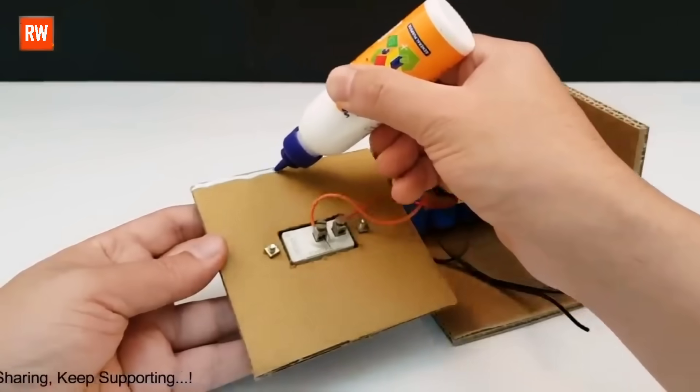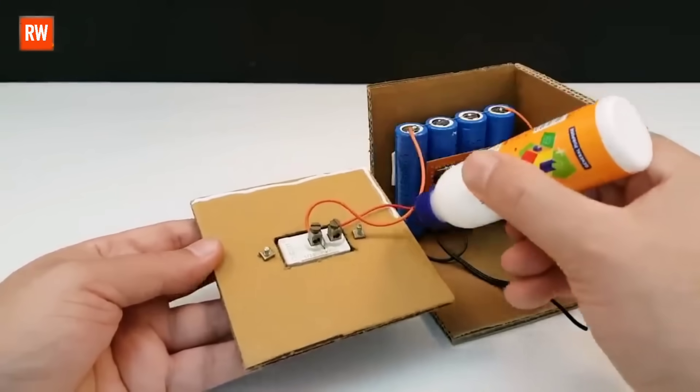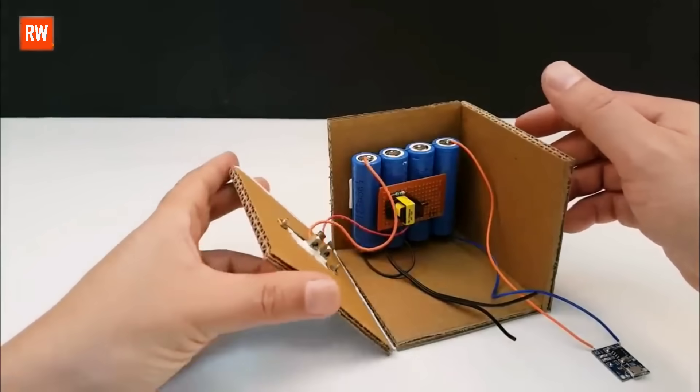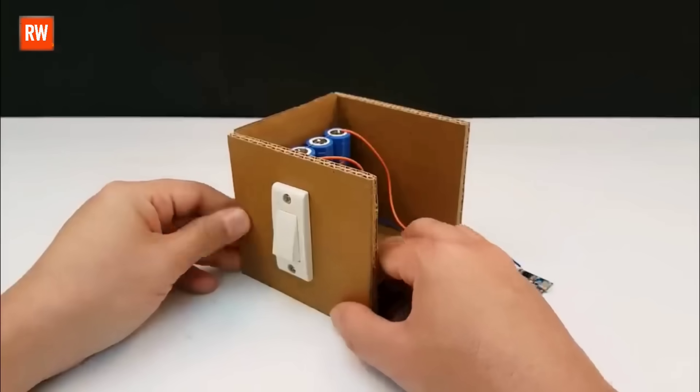I've now completed all the wiring and switch connections successfully, and everything is properly fixed inside the body. Now that all the internal components are properly fixed and connected, it's time to seal the outer body of the inverter.